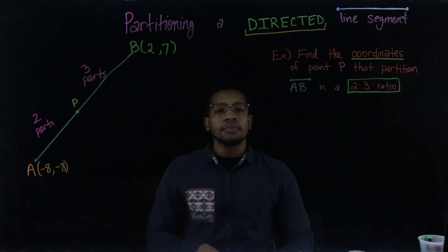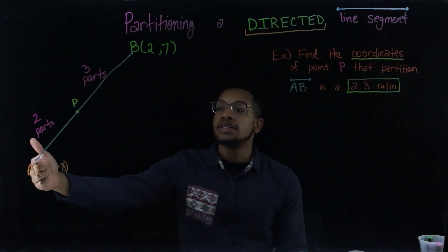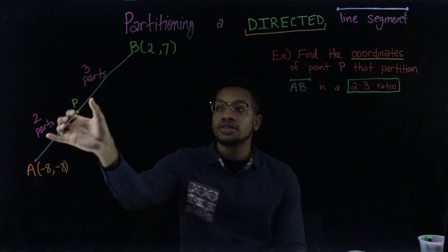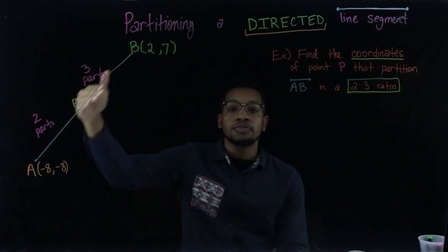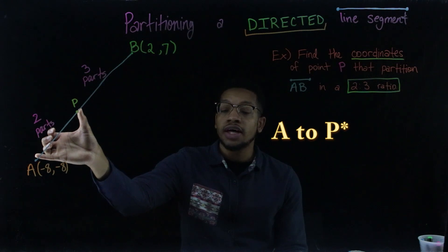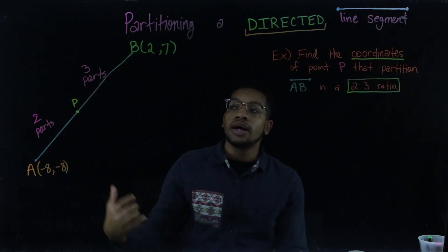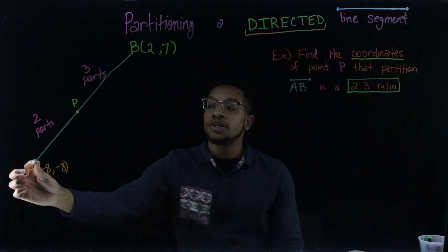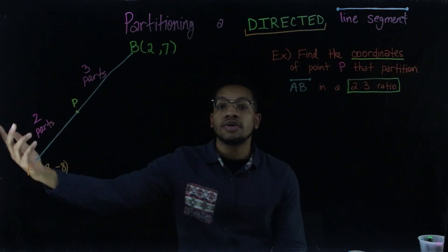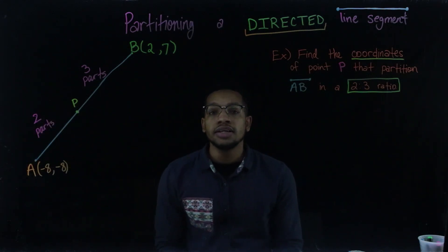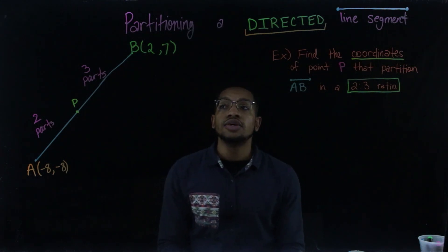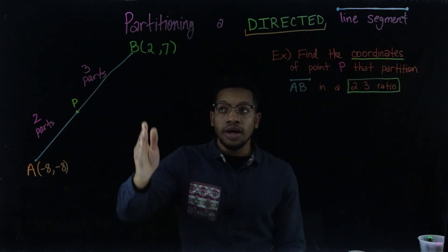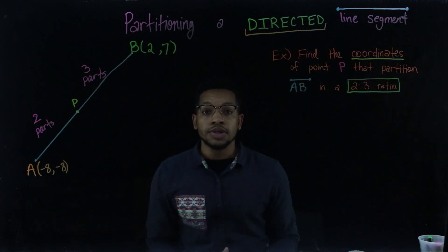When I first saw this problem, my first instinct was to just take the distance of A to B using the distance formula and then take two-fifths of that. Because if this part is two parts and P to B is three parts, the whole thing is five parts, so from A to B that length is two-fifths of the entire length. The distance formula gets you the right distance, but we're trying to find coordinates of that point — just having the distance doesn't tell us exactly where it falls. There's a better way: since we can't count a distance diagonally, we can split it up into a horizontal component and a vertical component.